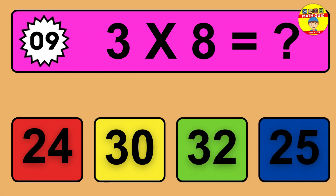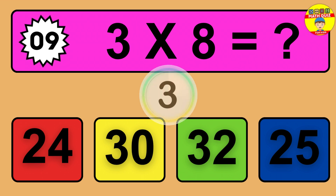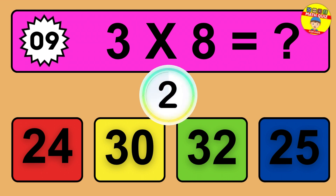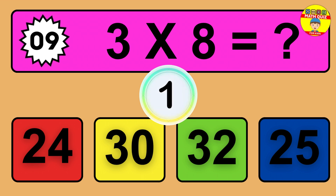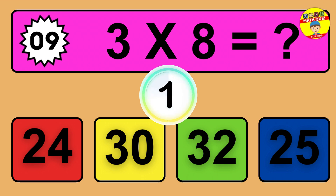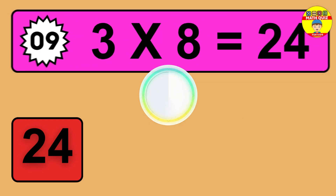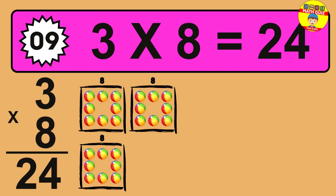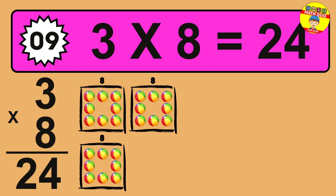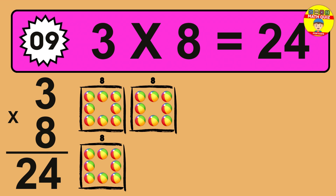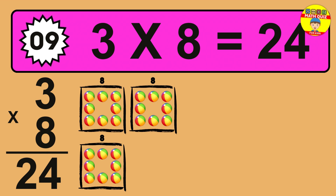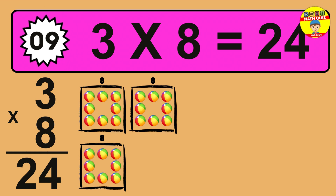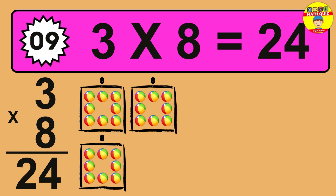Question 9. 3 times 8 equals what? The answer is 3 times 8 is 24. To calculate, we have 3 groups with 8 balls each one. So how many balls do we have? 24 balls.